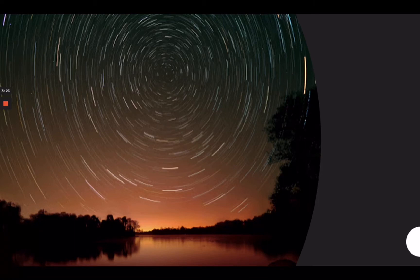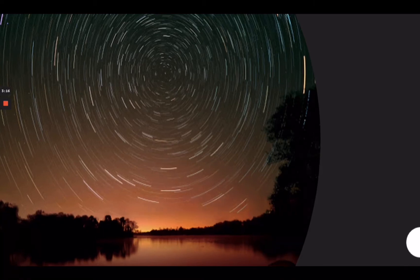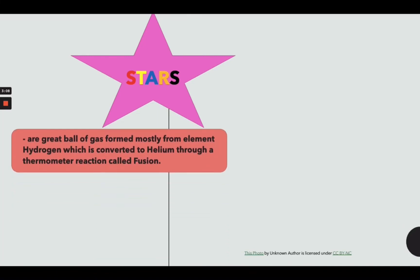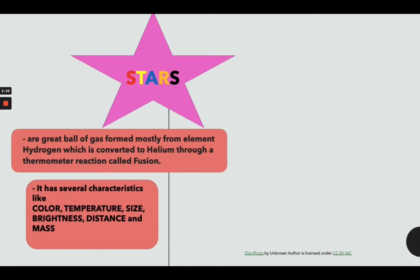Polaris, known as the North Star, served as a navigator for travelers in old times. Stars are a great ball of gas formed mostly from the element hydrogen, which is converted to helium through a thermonuclear reaction called fusion. Stars have several characteristics like color, temperature, size, brightness, distance, and mass.